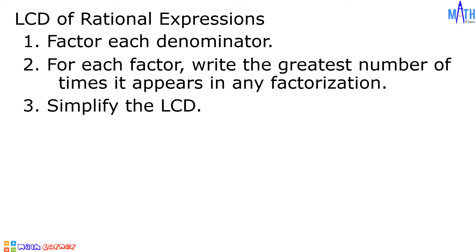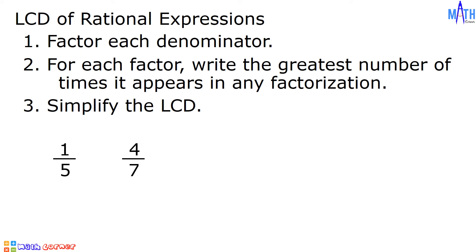Let us find the LCD of 1 over 5 and 4 over 7. We need to factor each denominator. In 1 over 5, the denominator is 5. In 4 over 7, the denominator is 7. Since 5 and 7 are both prime numbers, we will just multiply them. 5 times 7 is equal to 35 and this is the LCD.